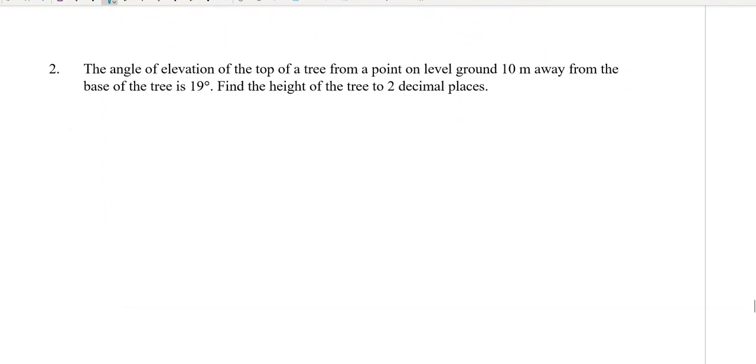The angle of elevation of the top of a tree from a point on level ground 10 meters away from the base of a tree is 19 degrees. So what's wordy with these questions is that they're wordy, but we have someone standing away from a tree. So the vertical line is my tree—very simple tree—and the person standing over here some distance from the base of the tree.